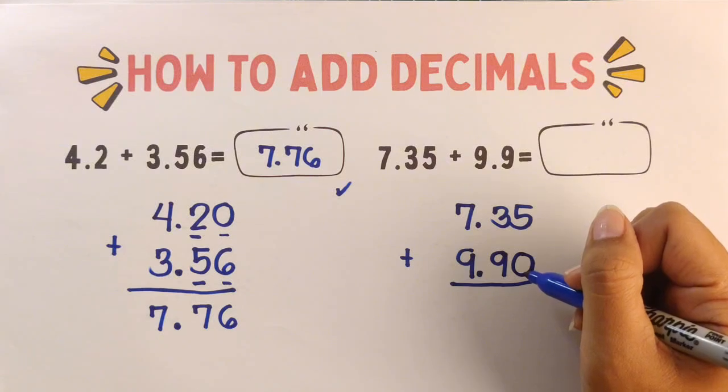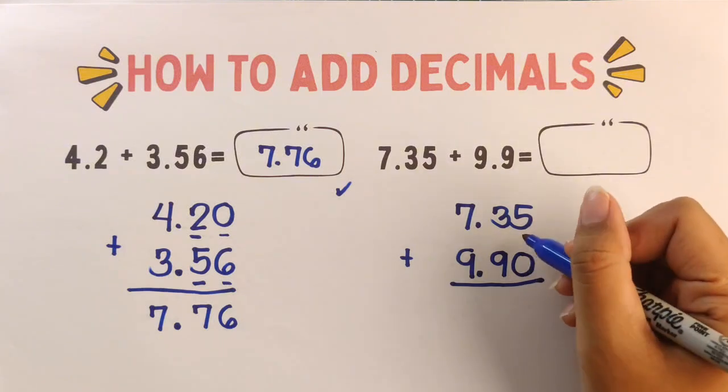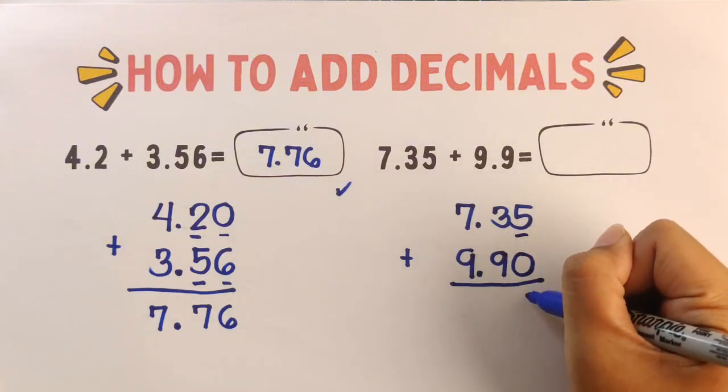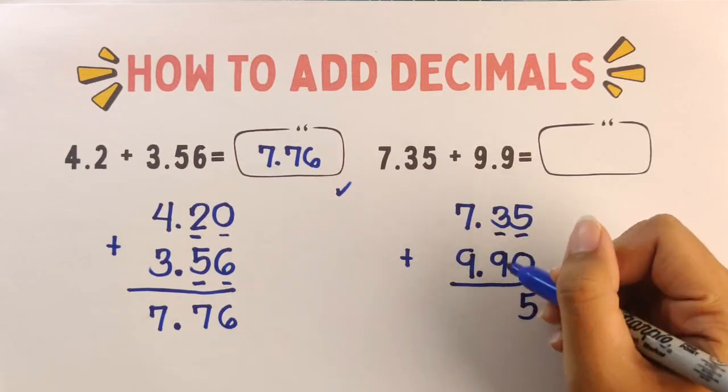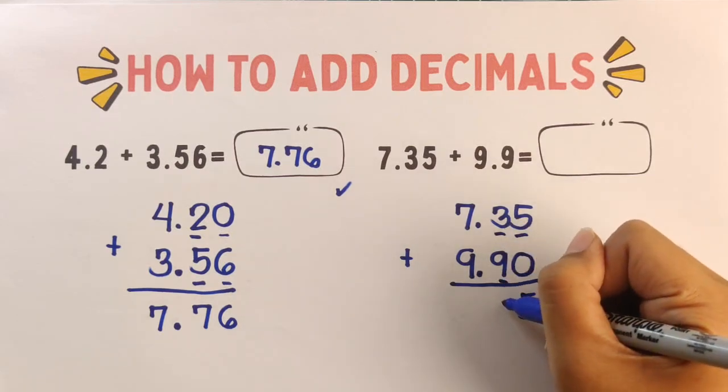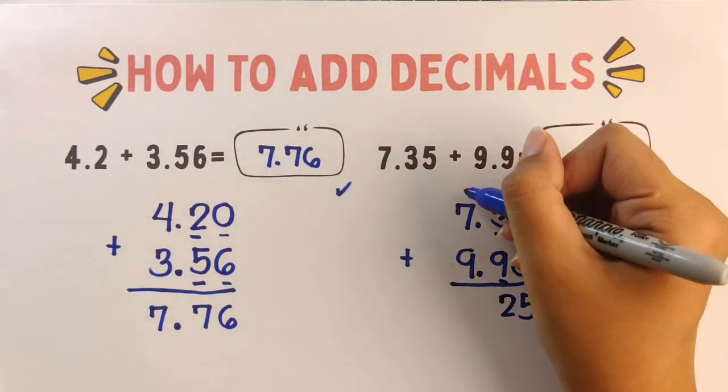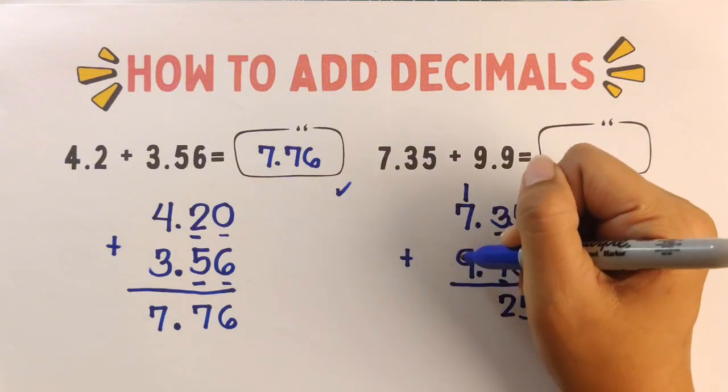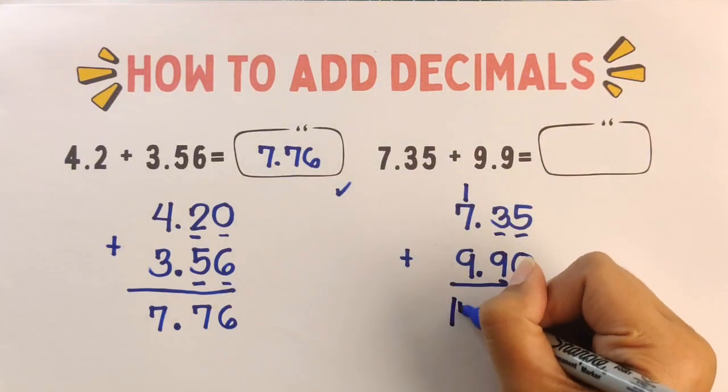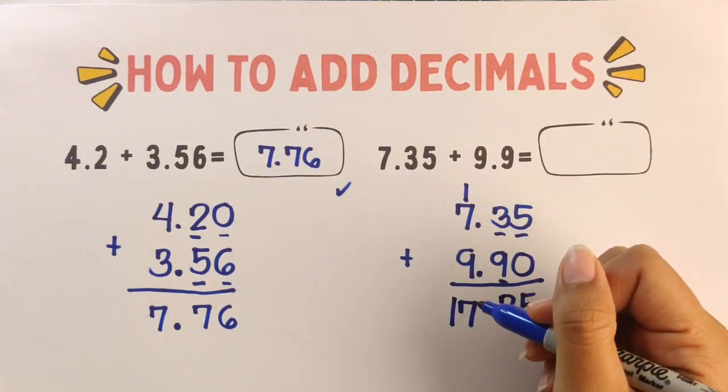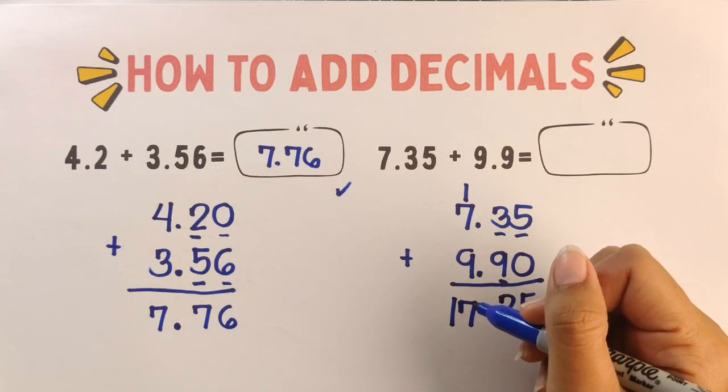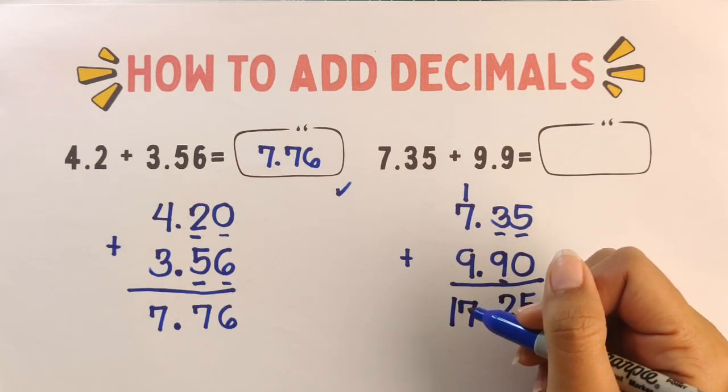Step number two: add the numbers like whole numbers. Five plus zero is five, three plus nine equals twelve, carry one. One plus seven is eight, plus nine is seventeen. Now step number three: bring down the decimal point. The final answer is 17.25.